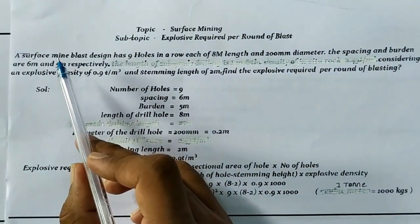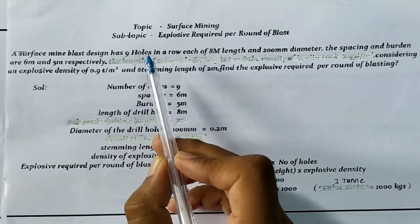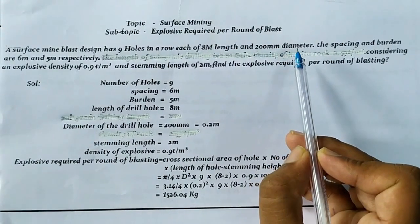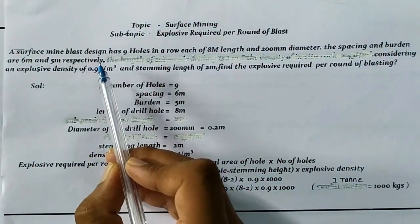Let's start the problem. A surface mine blast design has 9 holes in a row, each of 8 meters length and 200mm diameter. The spacing and burden are 6 meters and 5 meters respectively.